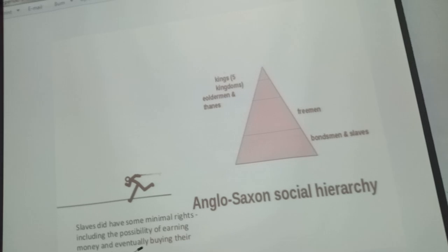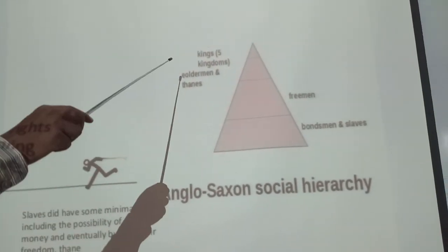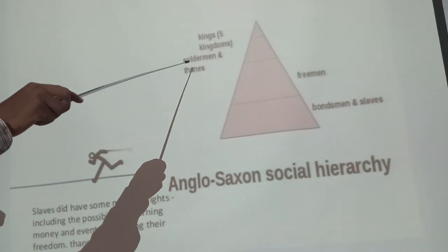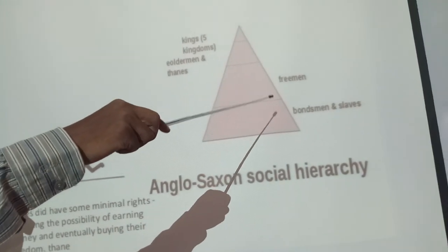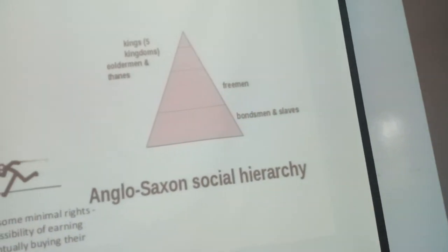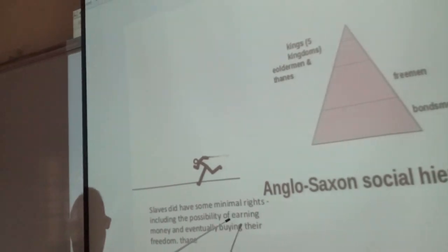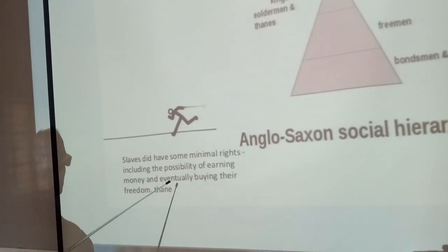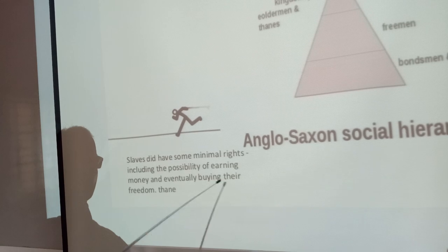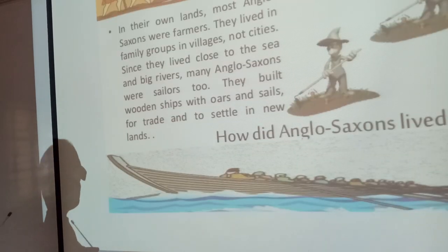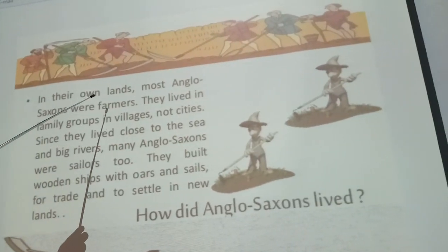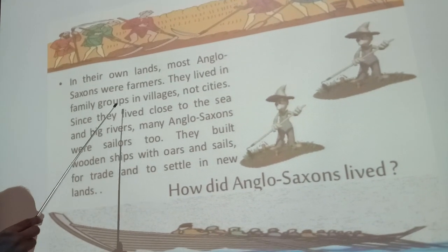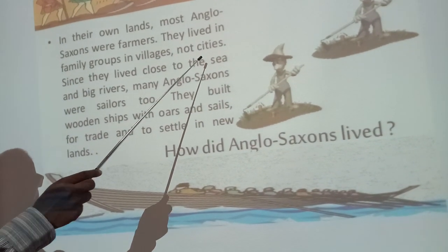Here is the Anglo-Saxon social hierarchy picture: Kings, kingdoms, old men (noblemen), free men, bondsmen, and slaves. Slaves did have some minimal rights, including the possibility of earning money and eventually buying their freedom. In their own land, most Anglo-Saxons were farmers. They lived in family groups in villages, not cities.